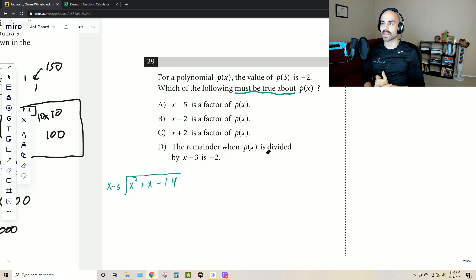skip it and when you come back, you see that they're telling us that p(x) is a polynomial and when you plug in 3, the outcome or output is negative 2. Which of the following must be true? And then they have a bunch of facts here.